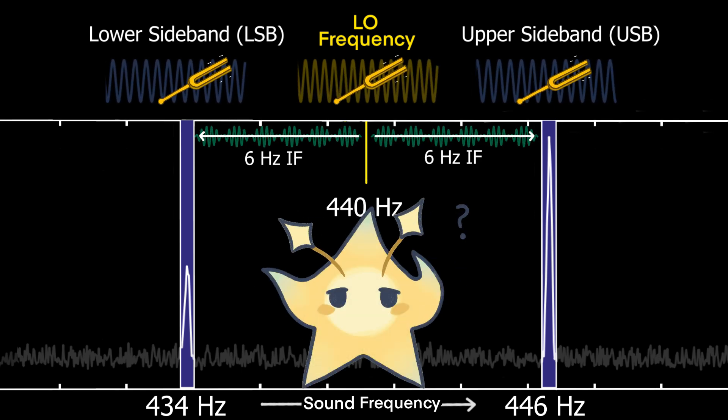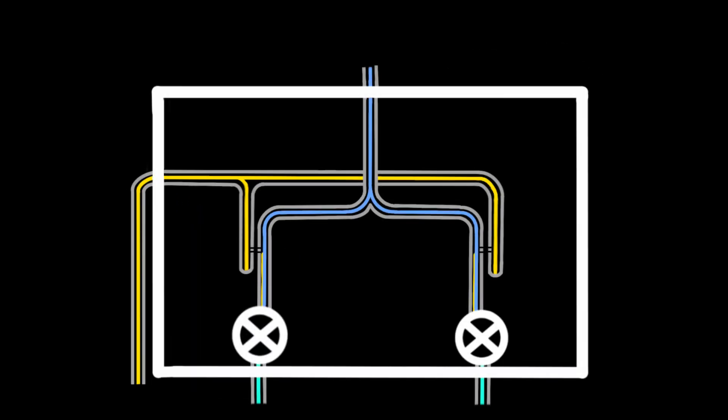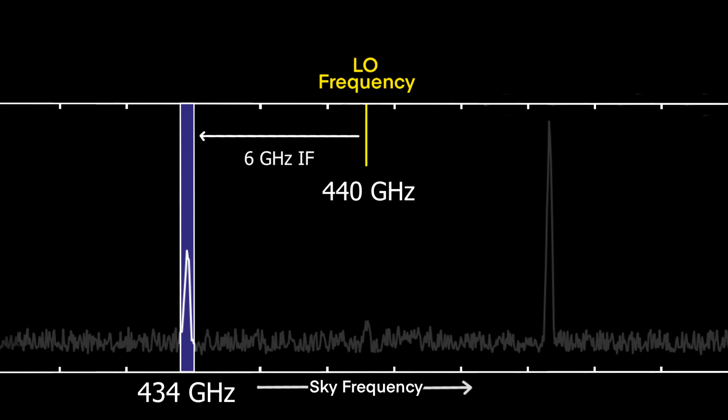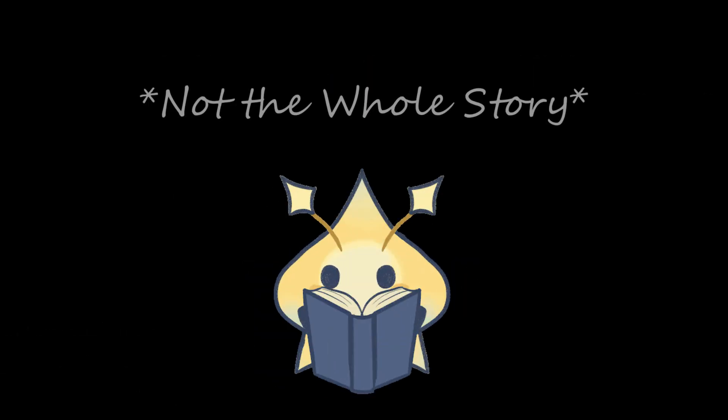So how does this relate to ALMA receivers? Suppose we wanted to detect emission at, say, 434 gigahertz. We inject a signal from the LO of 440 gigahertz into the mixer and mix it with the sky signal we want to detect at 434 gigahertz. This generates beats at an intermediate frequency, or IF, of 6 gigahertz. Of course, the LO signal at 440 gigahertz would also generate a 6 gigahertz IF from the sky signal at 446 gigahertz. In this case, we have 434 gigahertz in the lower sideband and 446 gigahertz in the upper sideband. Of course, this is not the whole story.